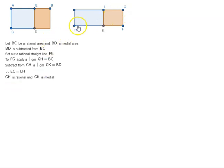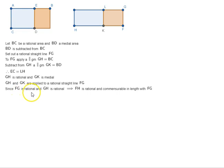GH is rational and GK is medial. And GH and GK are applied to a rational straight line FG. Since FG is rational and GH is rational, this implies that FH is rational and commensurable in length with FG. Since FG is rational and GK is medial, it implies that FK is rational and incommensurable in length with FG. So FH is commensurable in length with FG, but FK is incommensurable with FG. That means FK is incommensurable in length with FH.